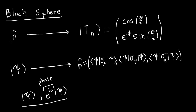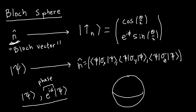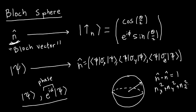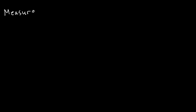It's worth mentioning two pieces of terminology. n-hat here is what you would call the Bloch vector — named after Felix Bloch. What's the Bloch sphere? Because n-hat has norm one, all of the Bloch vectors live on the Bloch sphere, which is just the sphere defined by n_x² + n_y² + n_z² = 1. That is the Bloch sphere.